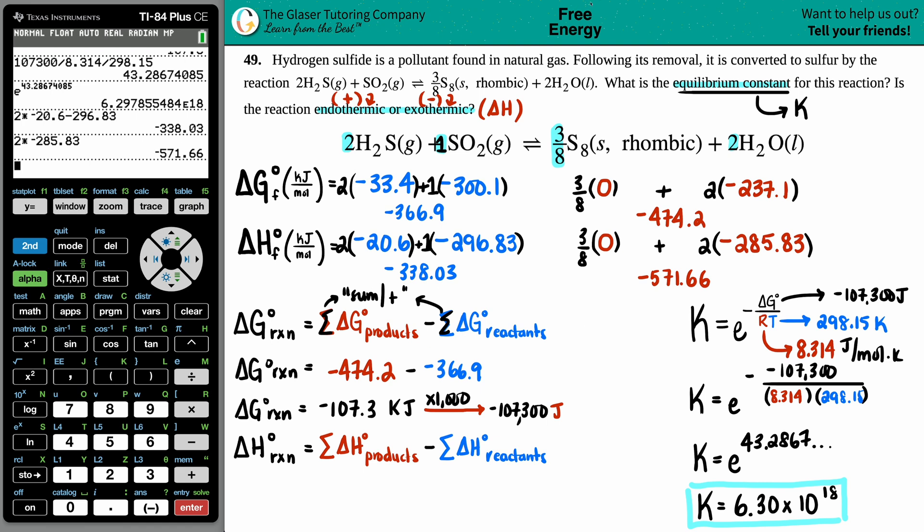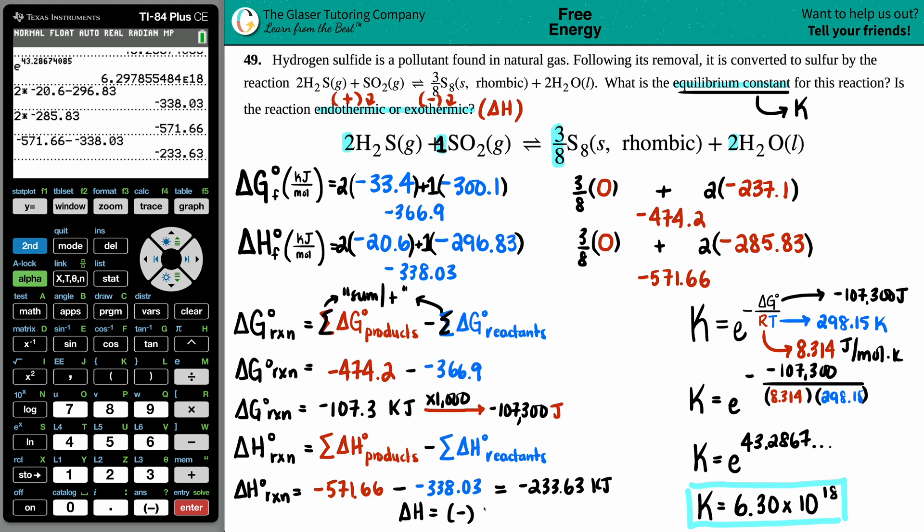Products minus reactants. ΔH for the whole entire reaction is the sum of the products, -571.66, minus the sum of the reactants, which is -338.03. That number is -233.63. That would be in kilojoules for the same reason - we times by the moles, so the moles cancel out. Since the ΔH value is a negative, that means that the reaction was exothermic.